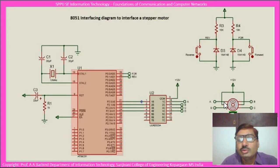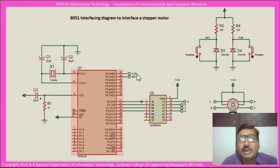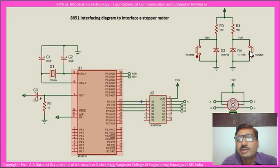It is possible to rotate this particular stepper motor in either direction. We are going to demonstrate two operations: forward direction and reverse direction. For that purpose, the port 0 pins are used to indicate whether the operation of the stepper motor will be in the forward or reverse direction. The user can select forward or reverse operation using two push buttons. If this push button is pressed, the operation of the stepper motor will be in the reverse direction.